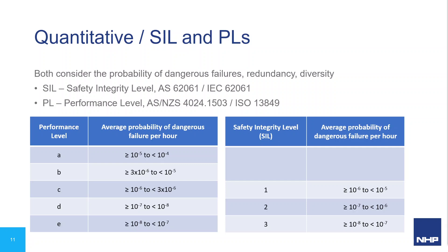Both are based on calculations of the performance of individual components in the safety control system and how they're arranged — ultimately a function of the probability of dangerous failure in any given hour. For example, PL-e and SIL3 are defined by a probability of dangerous fault between 10⁻⁸ and 10⁻⁷ per hour, roughly equivalent to one failure every 1,000 to 10,000 years — highly effective given a machine's defined expected lifetime of 20 years.